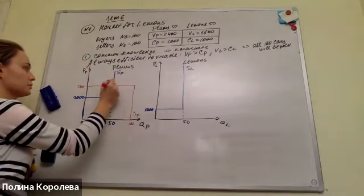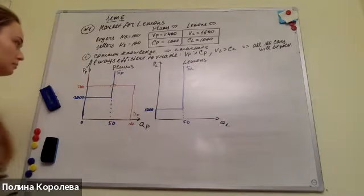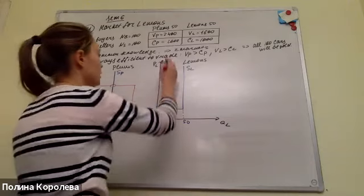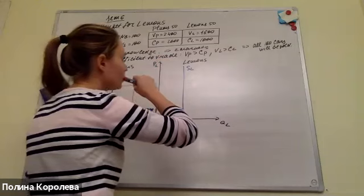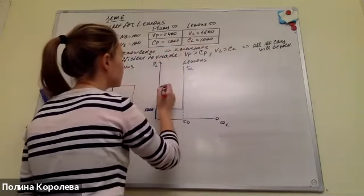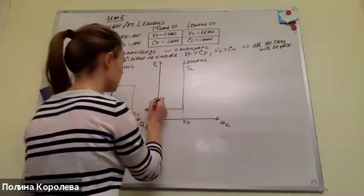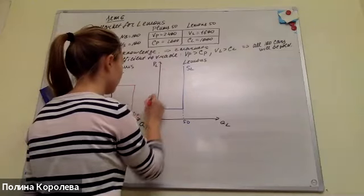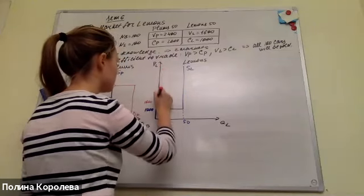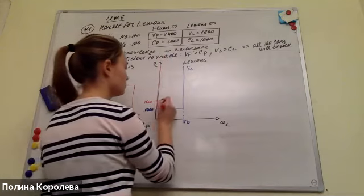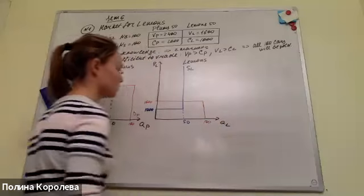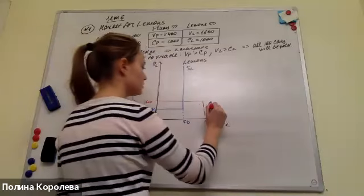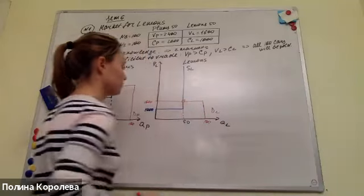Equilibrium is where demand crosses supply. For lemons: if price is higher than 1,600, quantity demanded is zero; at exactly 1,600, quantity demanded is between 0 and 100; if price is lower than 1,600, quantity demanded is 100. This is the demand for lemons and this is equilibrium.